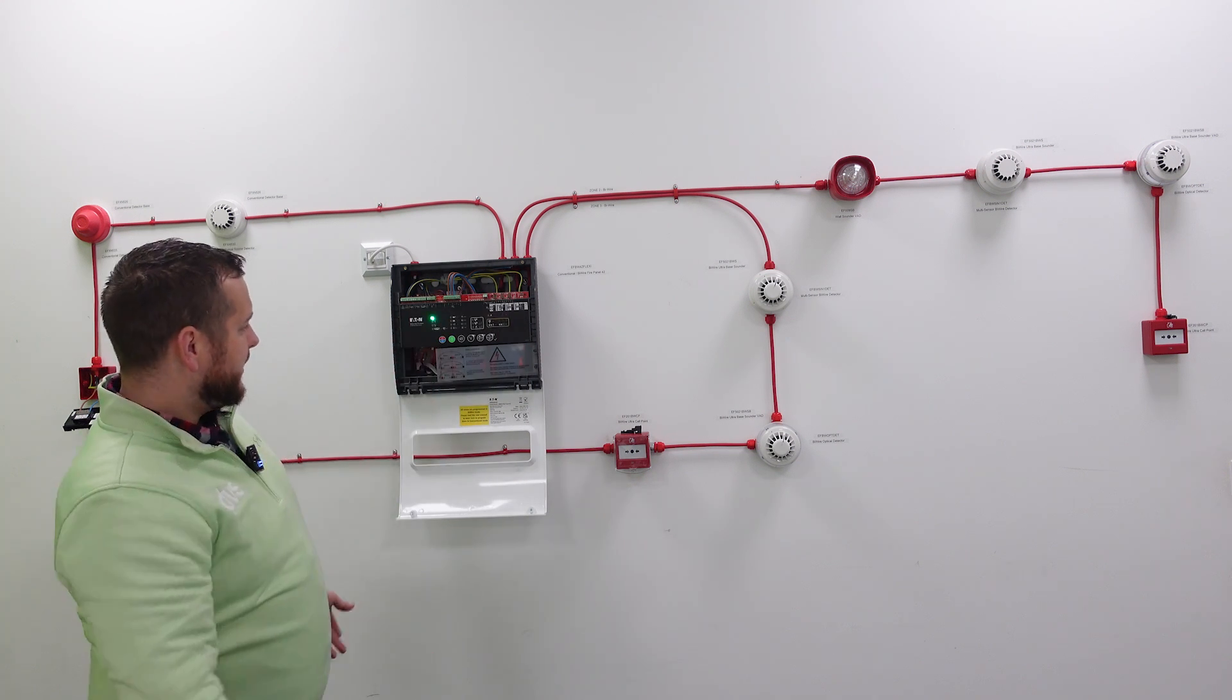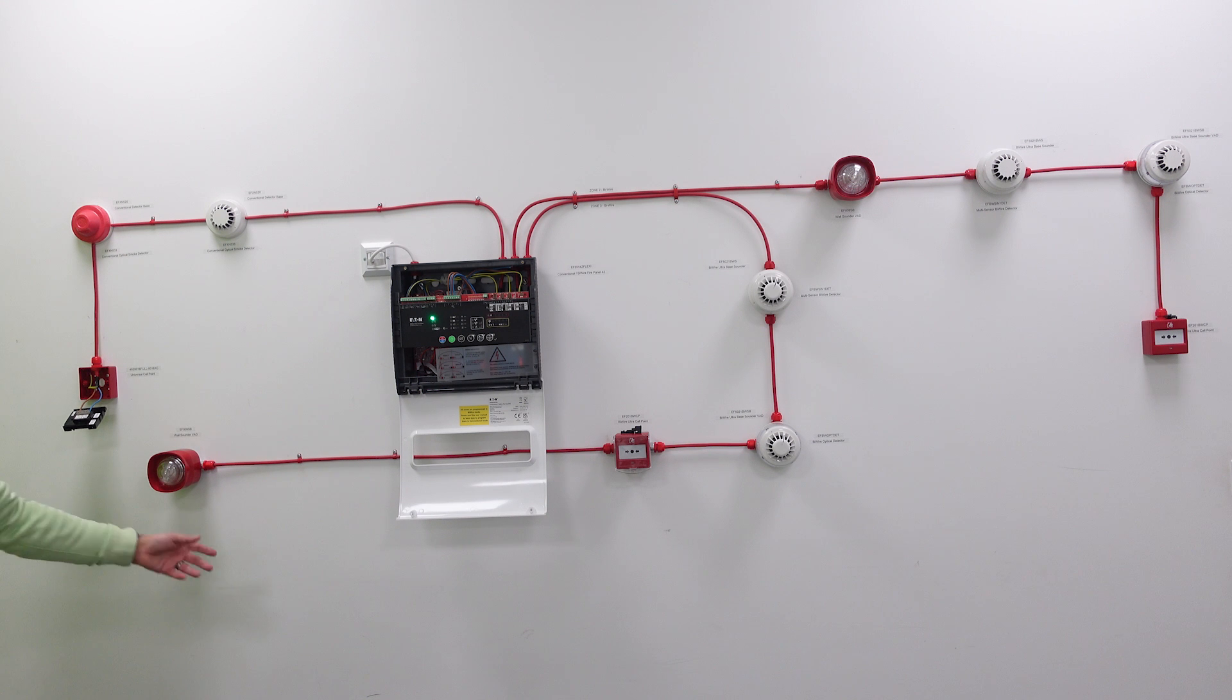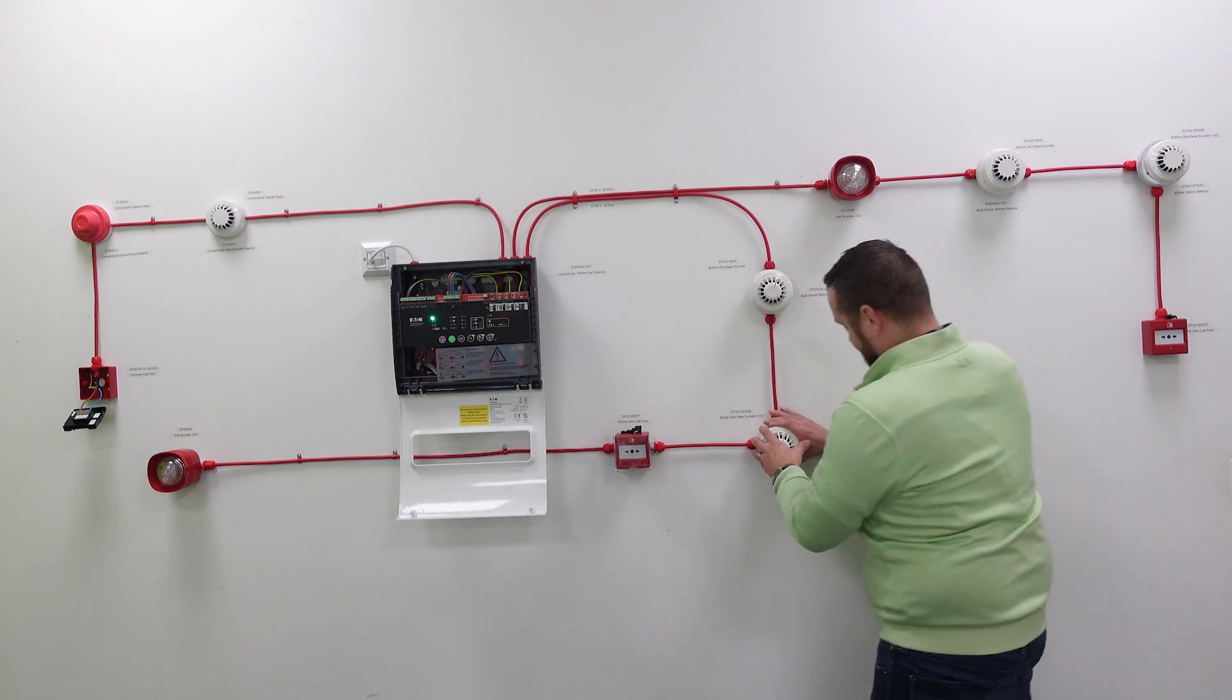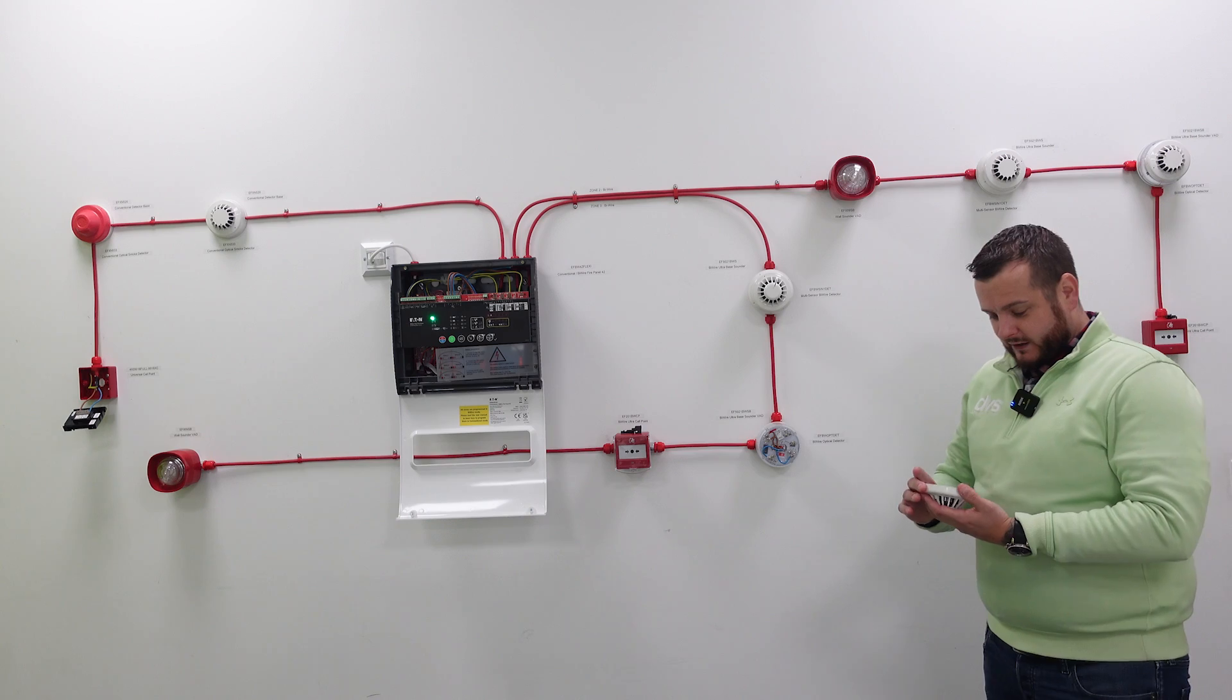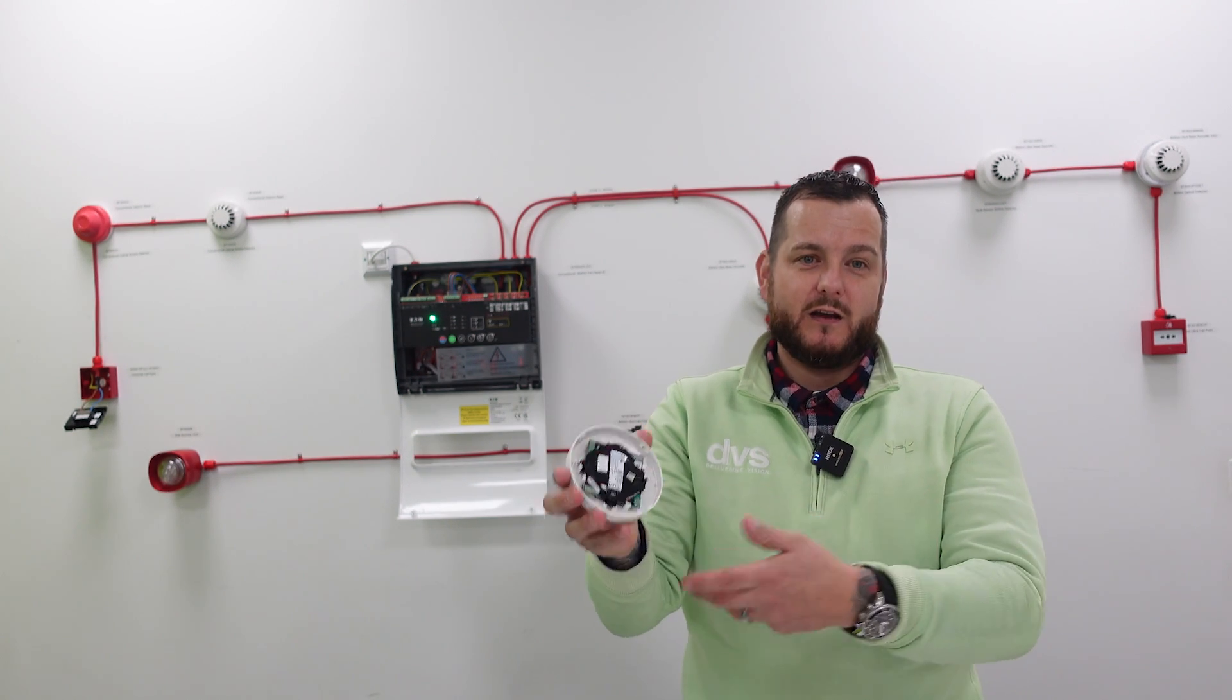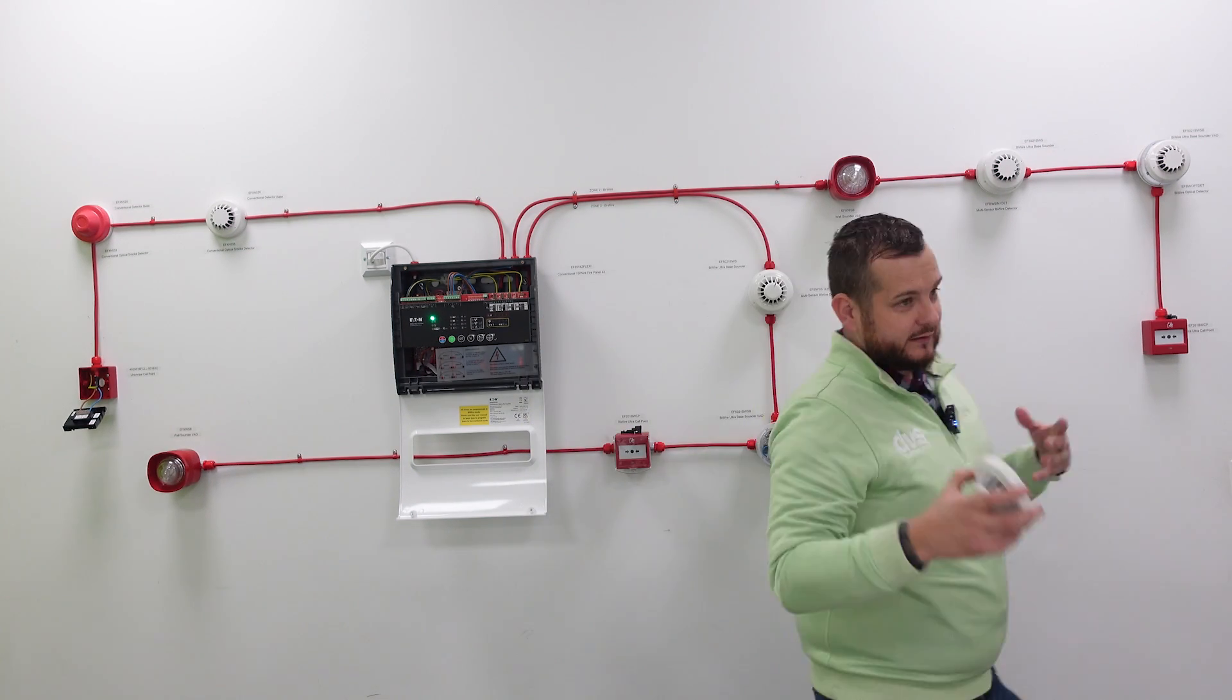It has two on-board sounder circuits. Again, you just fit the appropriate end-of-line module, end-of-line resistor, etc., depending if it's ByWire or conventional. But focusing on the ByWire, we come out, we've got our detection circuits, call points, and then another VAD here, and that will be fitted as per the design. Very good quality. You can twist these off the bases. We've got a VAD sounder base here. Cables come in and you can see here these are replaceable heads.